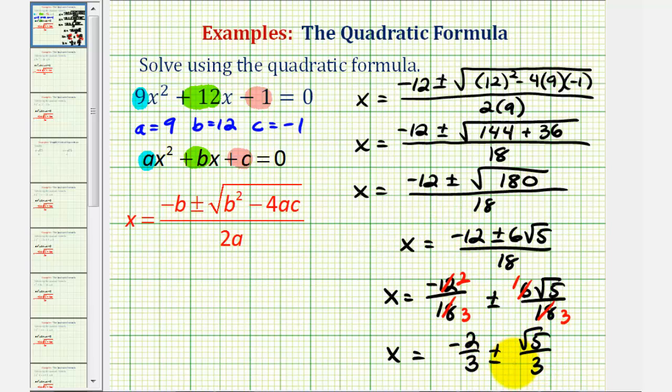The second way to simplify this would be to factor the numerator. So let's go ahead and show that. Again, the other option is to write x equals, there's a common factor of six in the numerator. So if we factor out six, that will leave us with negative two plus or minus square root of five.